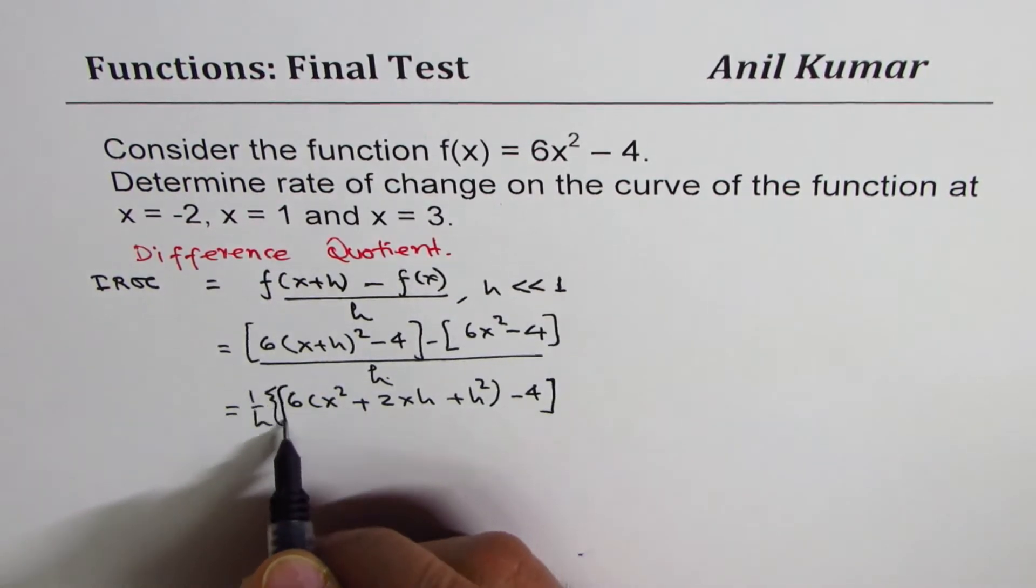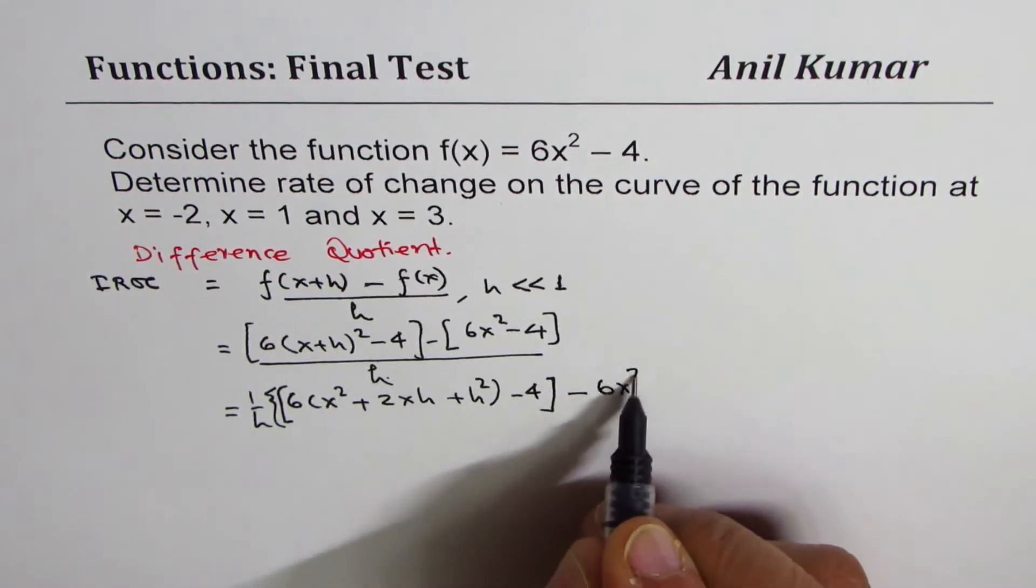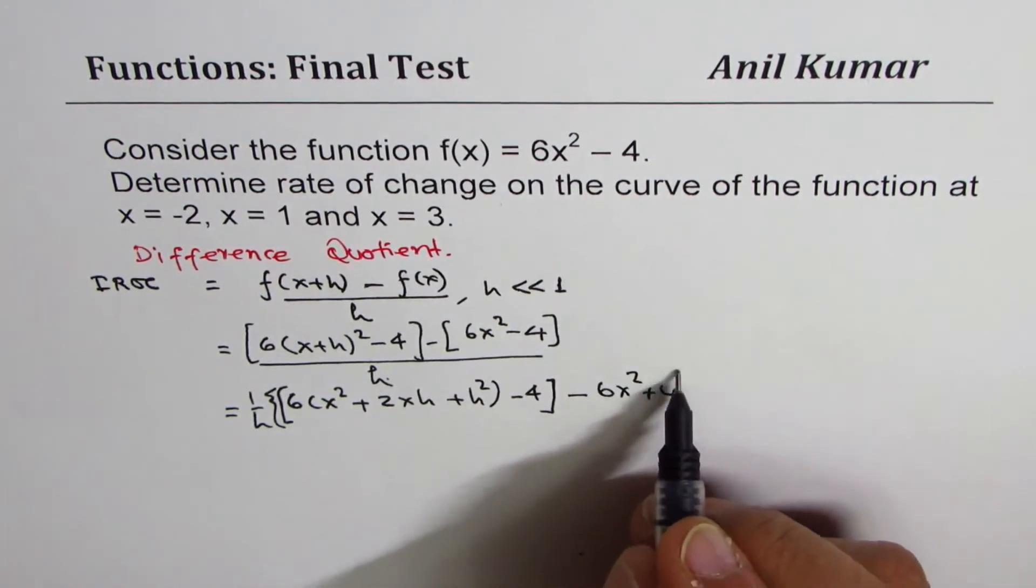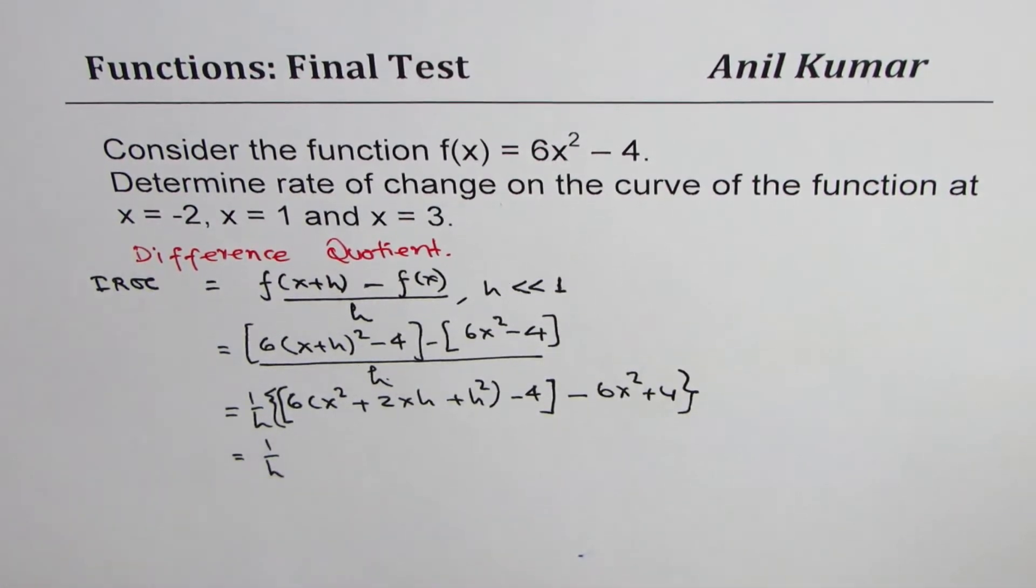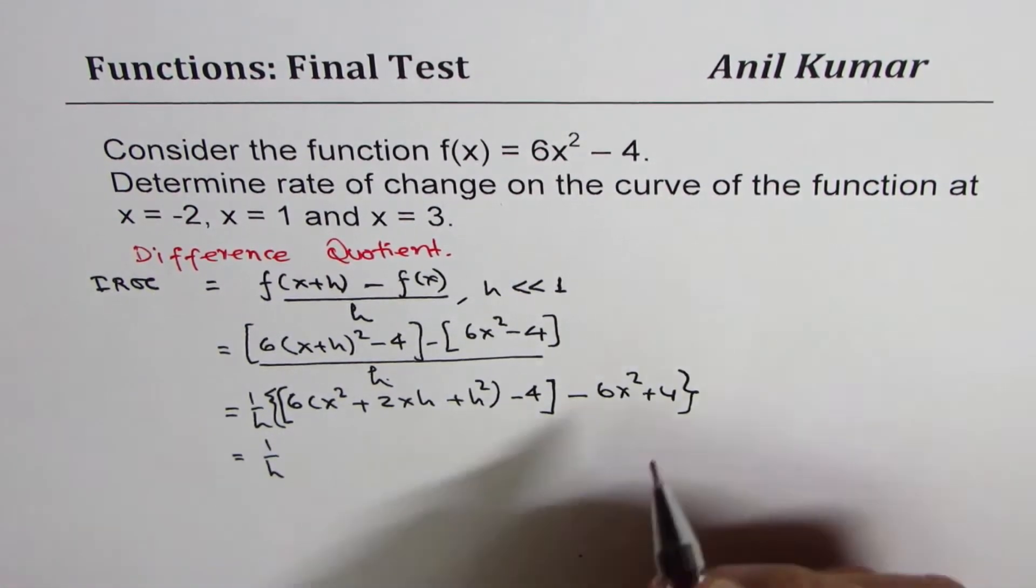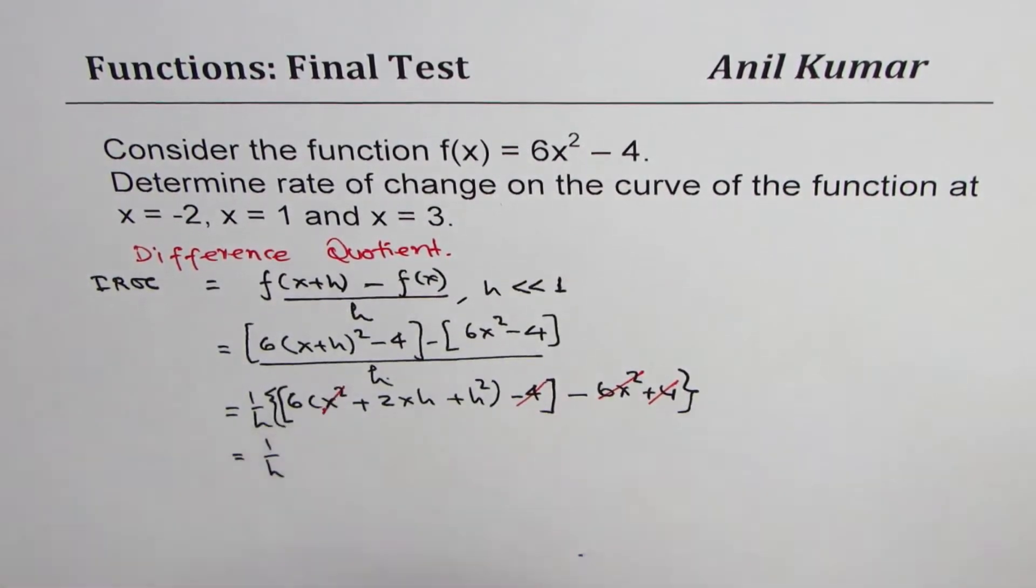Okay, let me use square brackets. Minus 6x² + 4. That makes sense. Which is equal to 1/h. And as you can see, these two terms will always cancel. 6x² plus 6 times x².